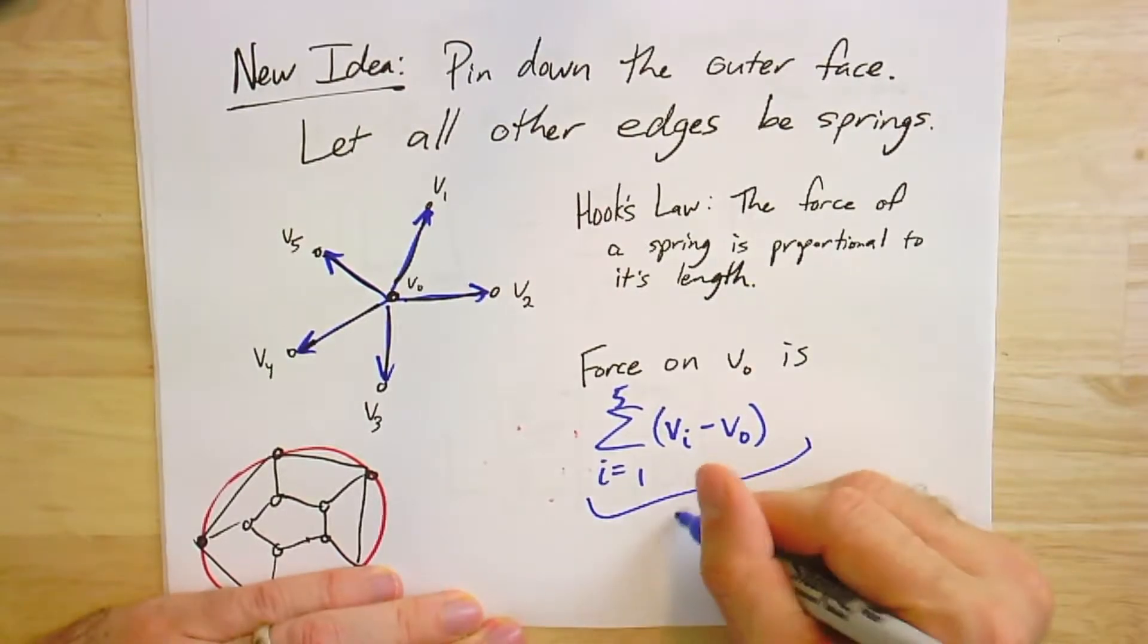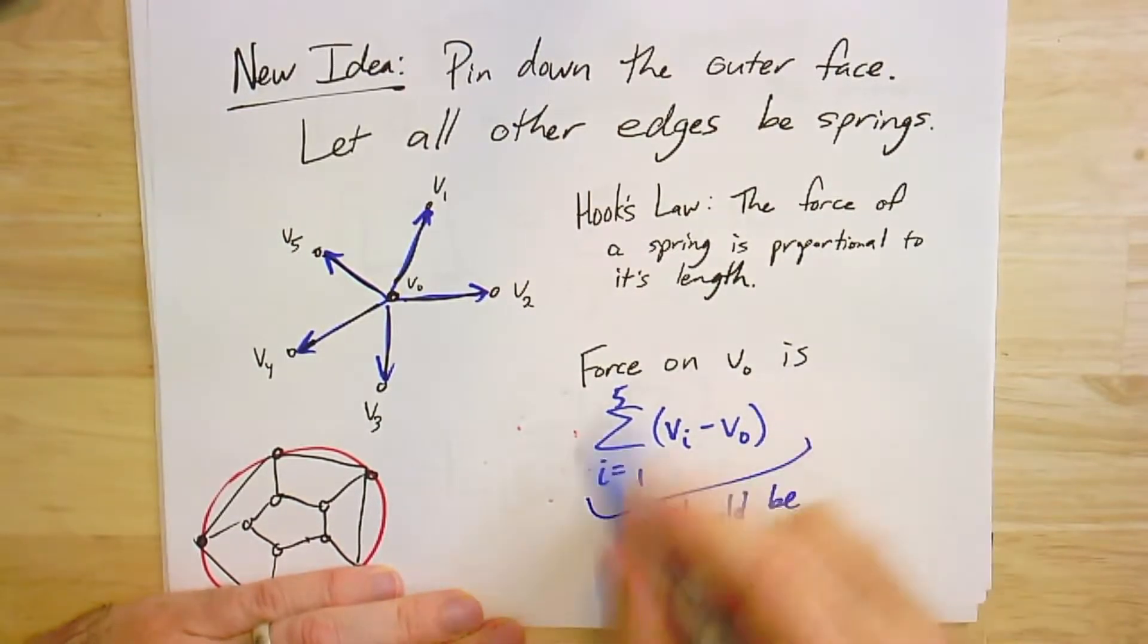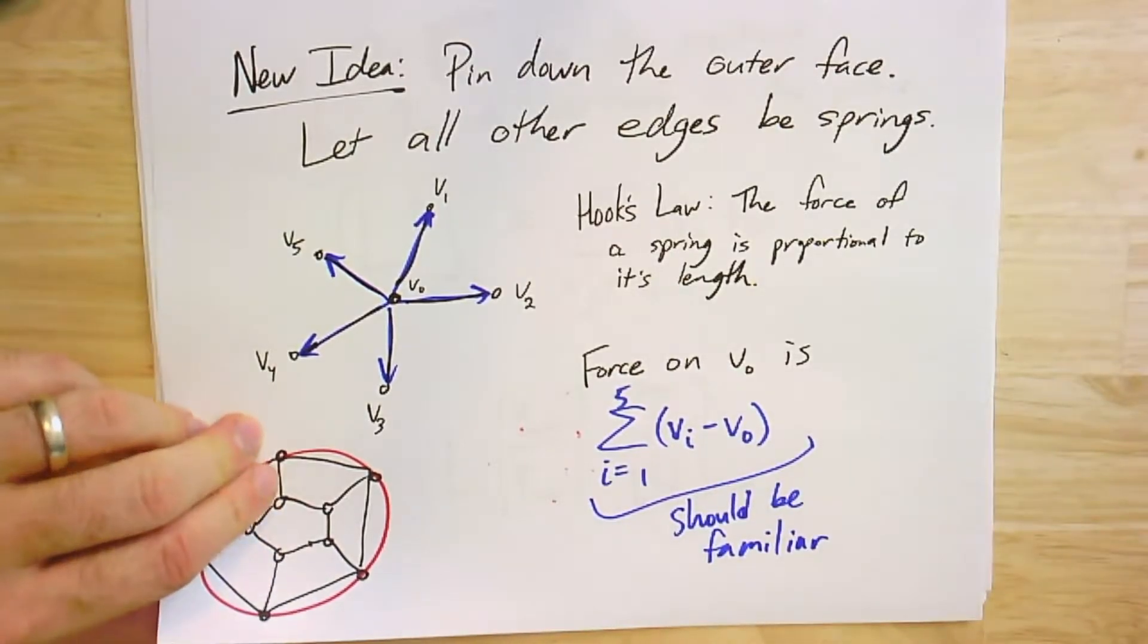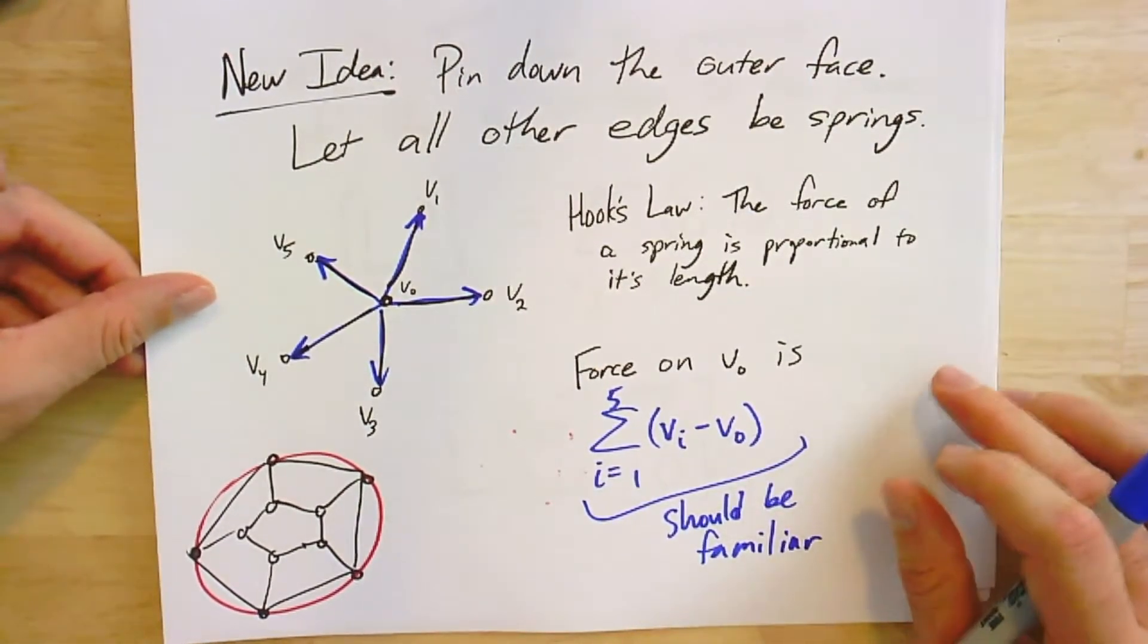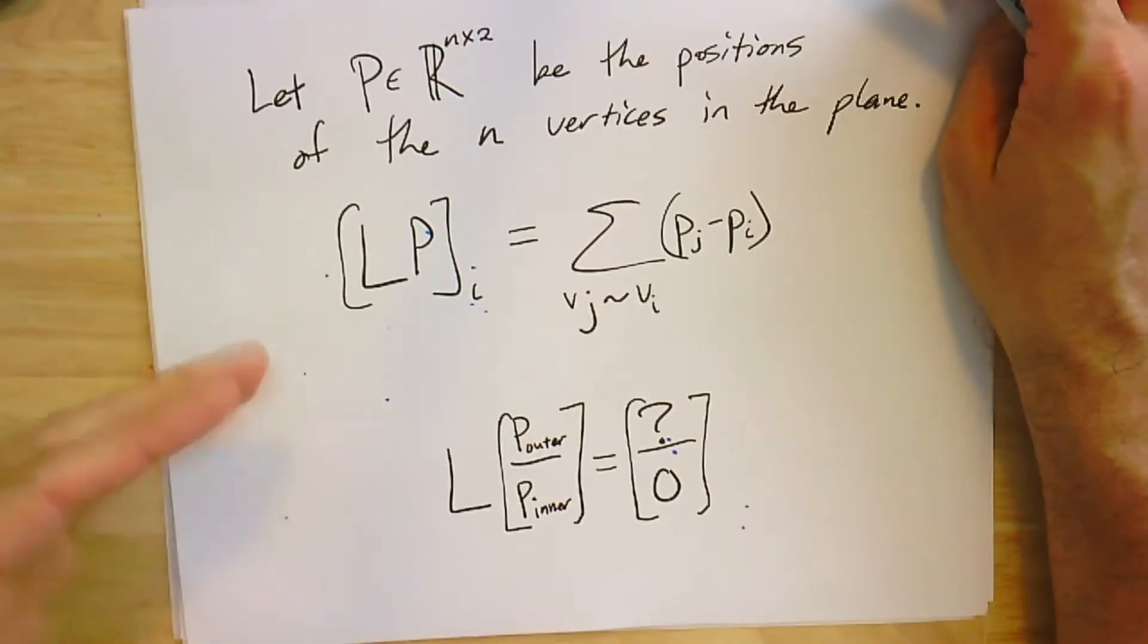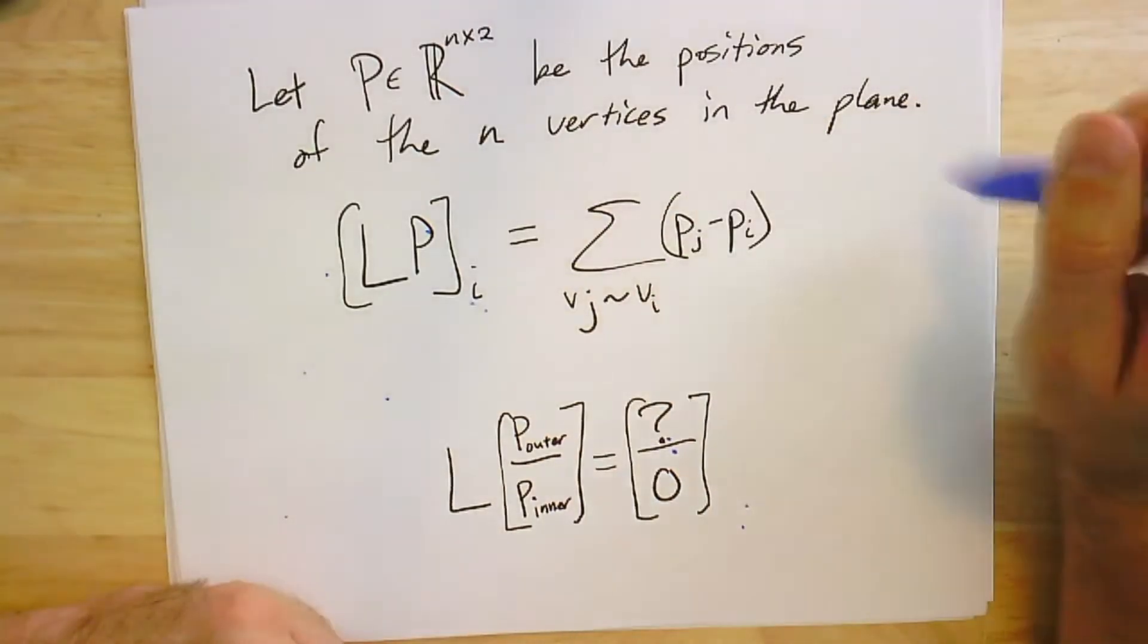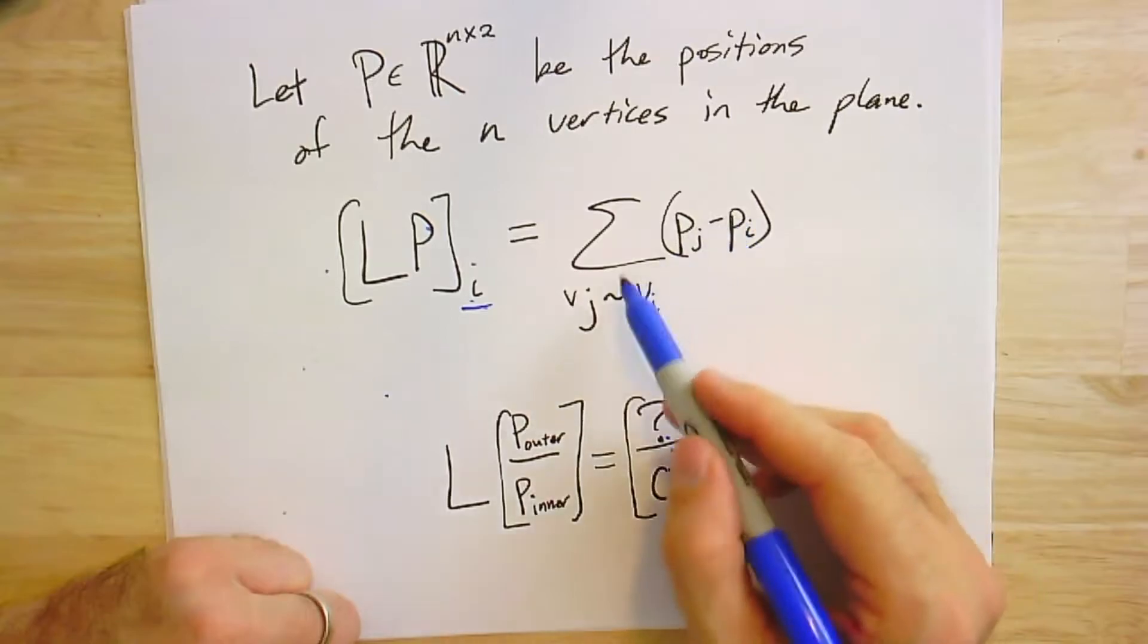Now this should look familiar. And this is exactly the kind of expression we saw, where we summed up all over all the neighbors of every vertex of the difference of that vertex with its neighbors. It's the minus of what we got when we took the Laplacian, right? So this is where Laplacians sneak back in.